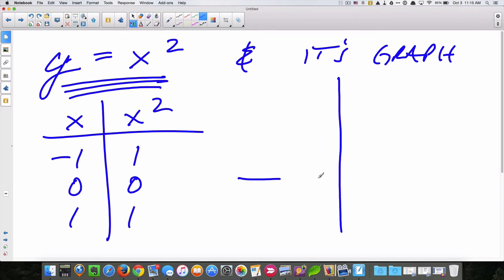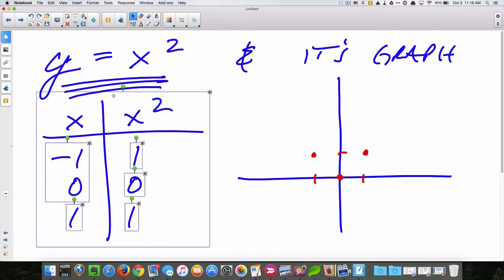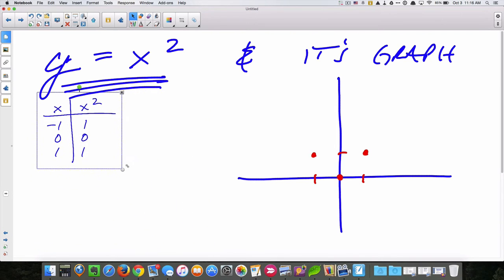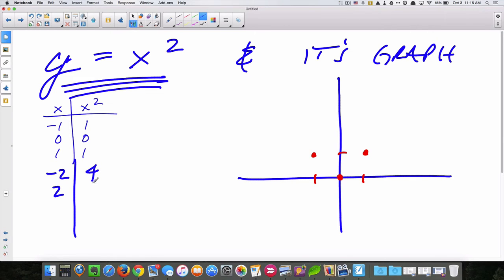So if you recall, when we plot these points, zero zero is here, negative one one is here-ish, and one one is about here. So does that give us enough information? I'm not sure. What if our function looked like that, which you should know it is not, but this doesn't necessarily give us enough information. So let's take a look at what would happen if we expanded the numbers to include negative two and two, we should get four and four.